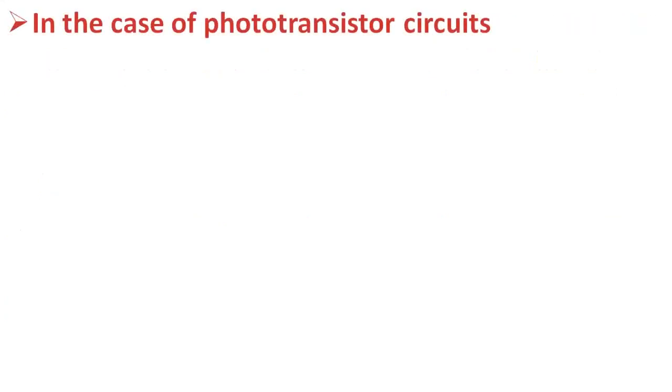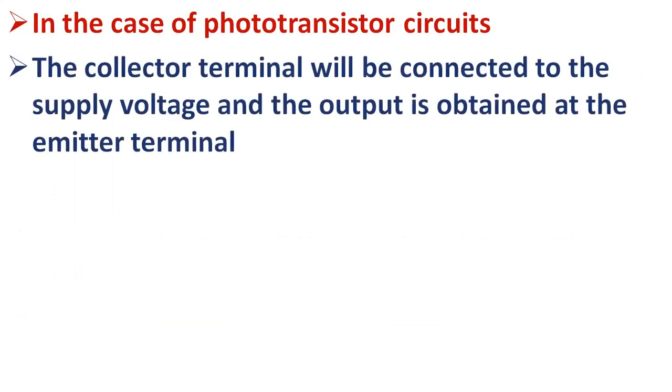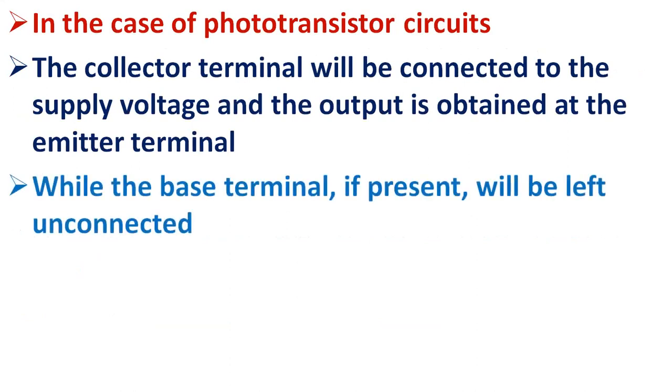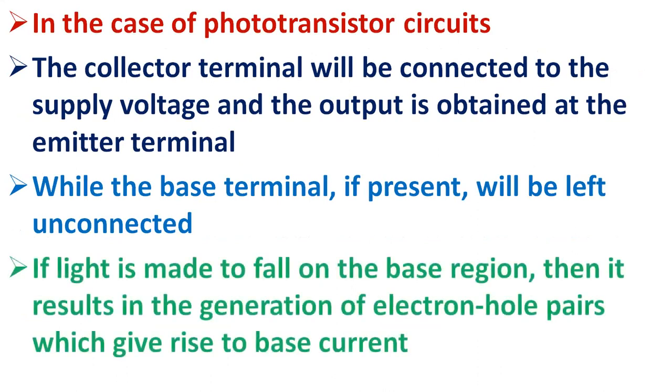Generally, in the case of phototransistor circuits, the collector terminal will be connected to the supply voltage and the output is obtained at the emitter terminal, while the base terminal, if at all present, will be left unconnected. Under this condition, if light is made to fall on the base region of the phototransistor, then it results in the generation of electron-hole pairs which give rise to base current, nothing but the photocurrent under the influence of applied electric field. This further results in the flow of emitter current through the device, resulting in the process of amplification.